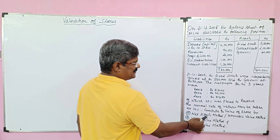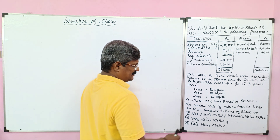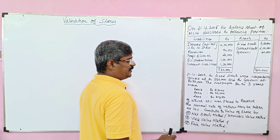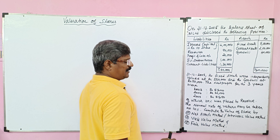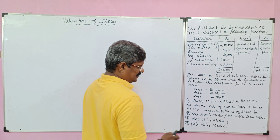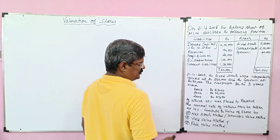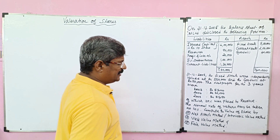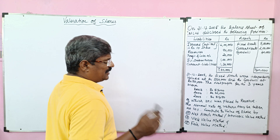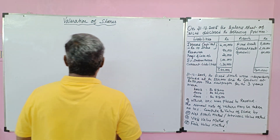In the net asset method, we use assets and liabilities to find the value of shares. In the yield value method, we use the profit of the organization. The fair value method is simply the average of the net assets method and the yield value method. Now we are going to find the share value by the net asset method first.